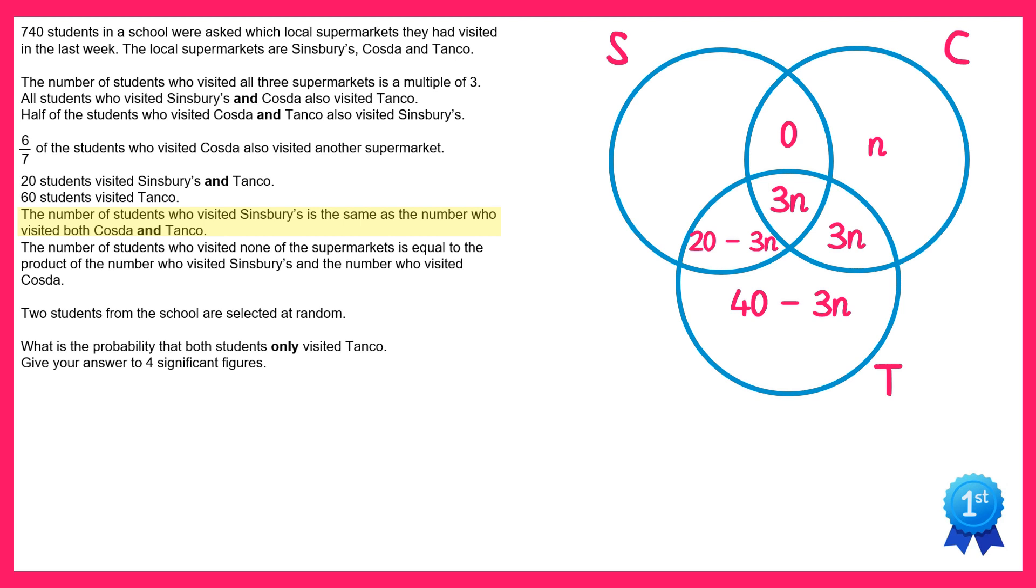So in the same way we did with the Tanko circle, we're going to do 6n take away all of the other sections, so 6n take away 3n take away 20 take away 3n and also take away 0, obviously, but that won't change anything. If you simplify this you end up with this section as 6n take away 20.